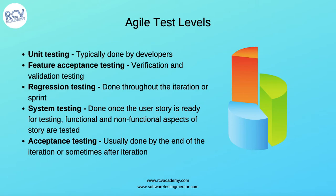It is very important that automated unit testing and automated regression testing are in place for each iteration to cope with the amount of regression testing needed in agile development. The next test level is system testing, which is done once the user story is ready for testing. This involves both functional and non-functional aspects of the story. System testing happens within the same iteration, and all these test levels are occurring in parallel.